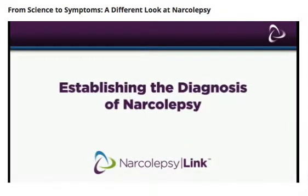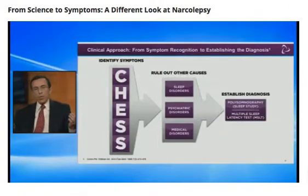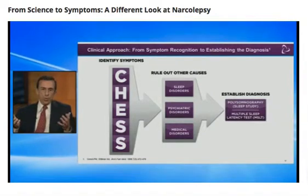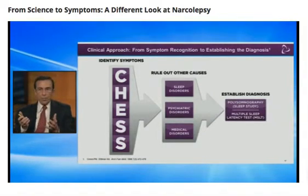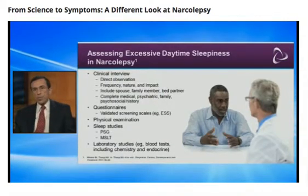In this next session, I'd like to discuss establishing the diagnosis of narcolepsy. How do we establish the diagnosis? What's the proper workup once we suspect it? That CHEST mnemonic is critical — think about those five symptoms. Once you feel narcolepsy may be under the differential diagnosis, the first thing you want to do is rule out other causes, since so many other disorders could masquerade as narcolepsy. And finally, the best way to establish the diagnosis is polysomnography followed by multiple sleep latency testing.